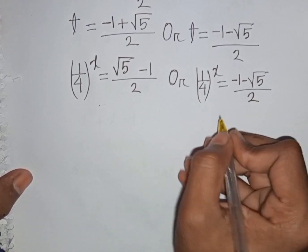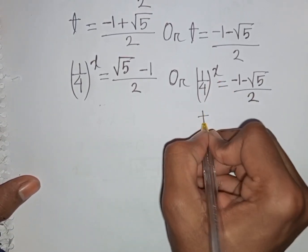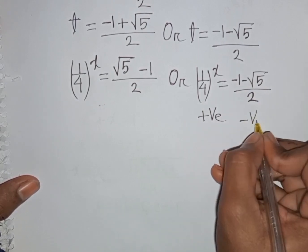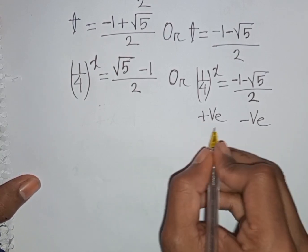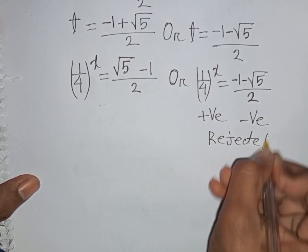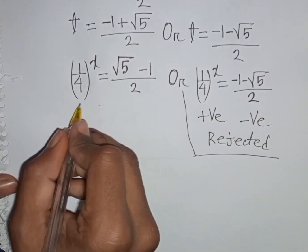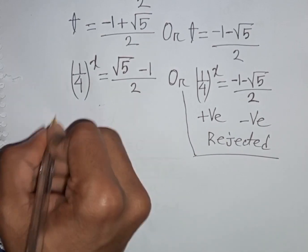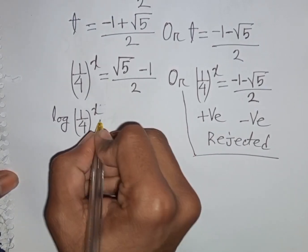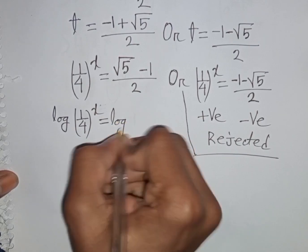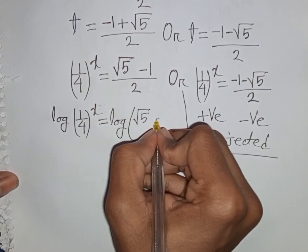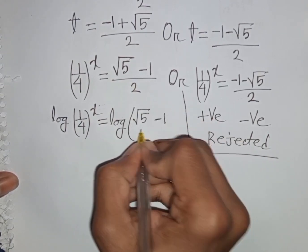We note that (1/4) to any power is always positive, but (−1 − √5)/2 is always negative. So positive cannot equal negative — this case is rejected. For the valid case, we take the log of both sides: log((1/4)^x) = log((√5 − 1)/2).